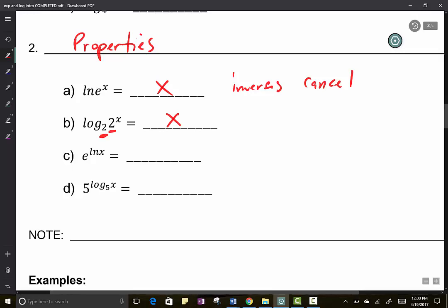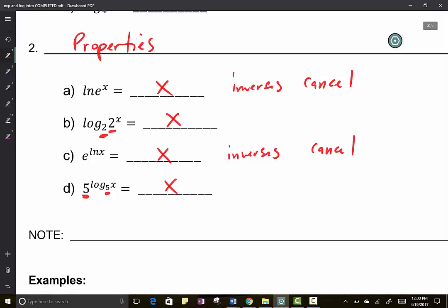Once again, part a and part c are literally the same, but the top one is a logarithm and then c is an exponential, but they still cancel. Inverses cancel. And then down here we have the same base with the same base, they cancel again. So these are just shortcuts for you to kind of save you some time.